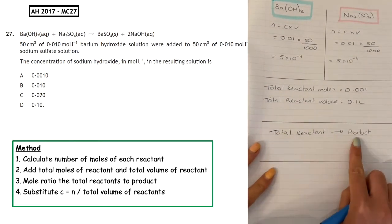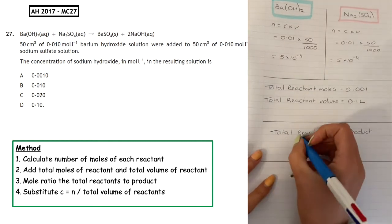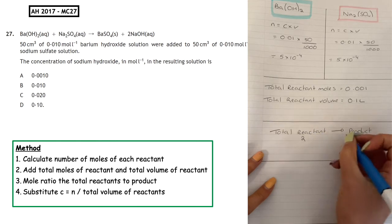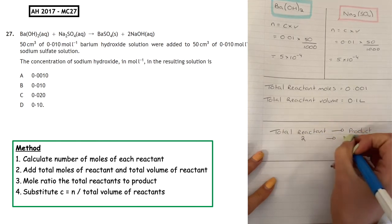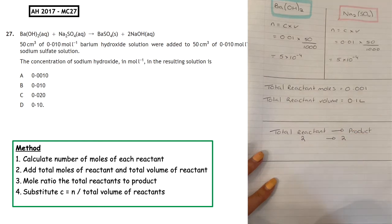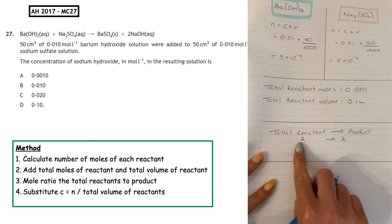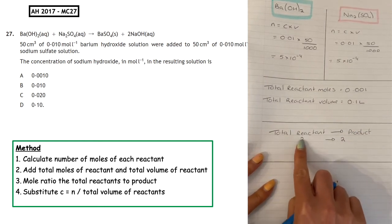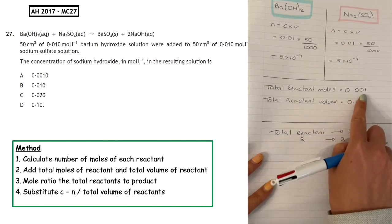We then want to proportionalize. We're looking at our total reactants and proportionalizing for our product. What we can see is from the balanced equation, we've got a total of 2 moles of our reactant, and we have 2 moles of our sodium hydroxide product.